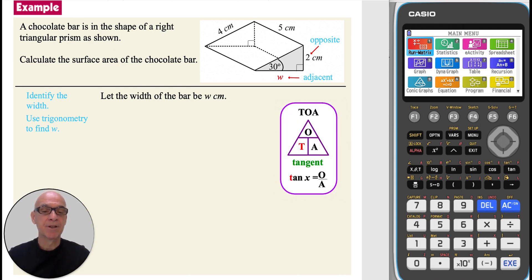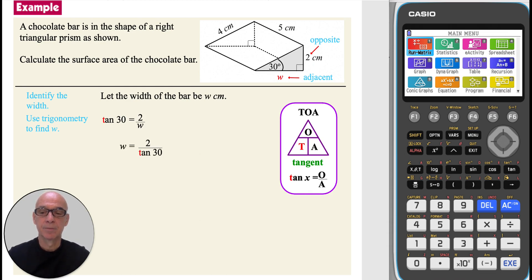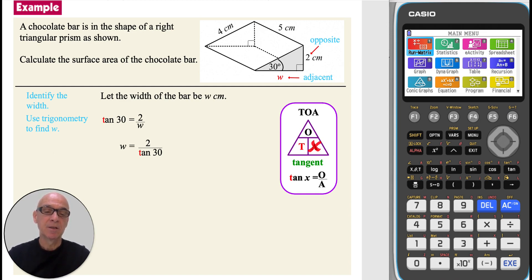Remembering that tangent is the ratio of opposite to adjacent. Writing tan 30 equals 2 divided by W, and rearranging gives W equals 2 divided by tan 30. Alternatively, we can cover up adjacent in the trigonometry triangle, showing that opposite needs to be divided by the tangent of the angle.